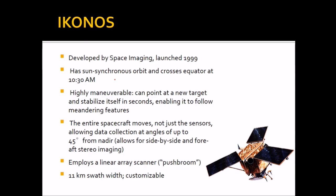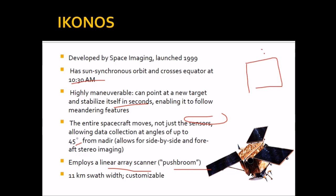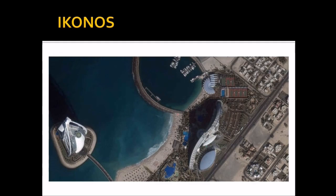IKONOS was developed by Space Imaging. It is also sun-synchronous, crossing the equator at 10:30 a.m. It is highly maneuverable and can point at any new target, stabilizing itself in seconds. The entire spacecraft moves — not just the sensors — allowing data collection at angles up to 45 degrees from nadir. It employs a linear array scanner, that is push broom, with an 11 by 11 kilometre data frame.